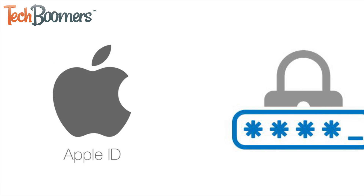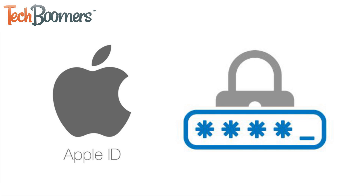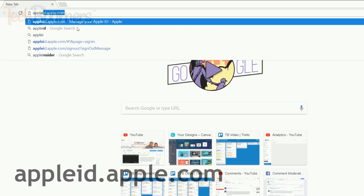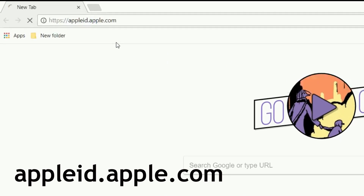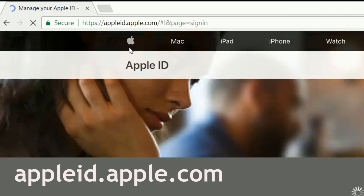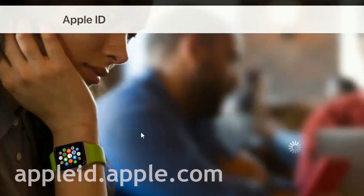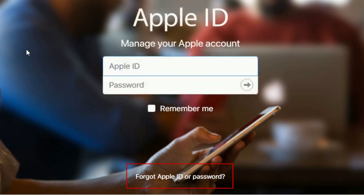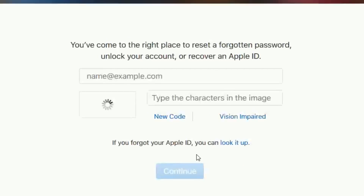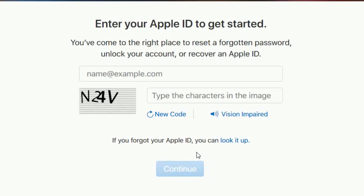Before you begin, make sure you know the password to your Apple ID account. For security reasons, you'll need to enter the password in order to disable Find My iPhone. If you've forgotten your password, you can reset it by going to appleid.apple.com and clicking Forgot Apple ID or Password. A link to this page will be listed in the description box below.